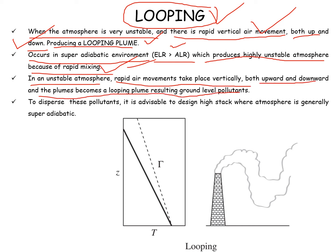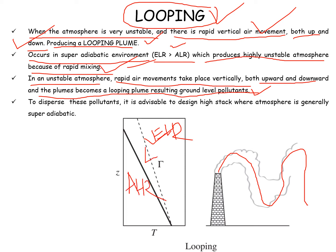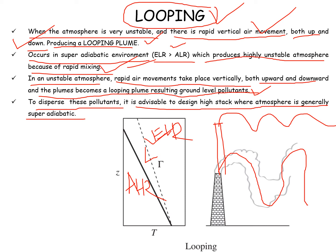In an unstable atmosphere, rapid air movement takes place vertically both upward and downward. The plumes become looping, resulting in ground-level pollutants — you can see the plume coming down to the ground and rising again. To disperse this pollutant, it is advisable to design a high stack where the atmosphere is generally superadiabatic, so the plume will not come down and will protect the downstream population.